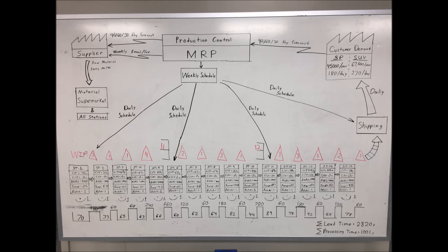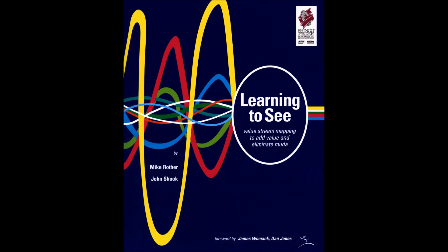Now, the current state value stream map is completed. For more information on value stream mapping, we highly recommend reading the Shingo Prize winning Learning to See by Mike Rother and John Shook.